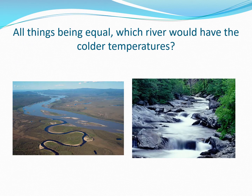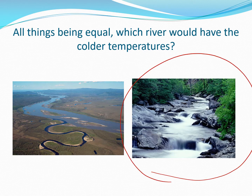So all things being equal, which river would have the colder temperatures? You'd probably choose the mountain stream — and you might say the mountains are colder than the flatlands, which is true. But even if you put these two streams at the same elevation, the fast-moving stream, which has more evaporation taking place, would still be the colder of the two.